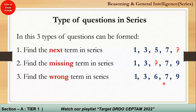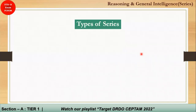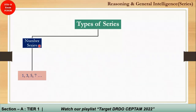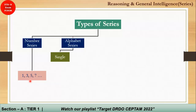Coming to the next topic: types of series. The first one is the number series, where there will be a series of numbers and questions will be based on those numbers. The second is the alphabet series, which can be bifurcated into two categories: single alphabet and multiple alphabets. In single alphabet, only single alphabets are given and you determine the next or missing alphabet.